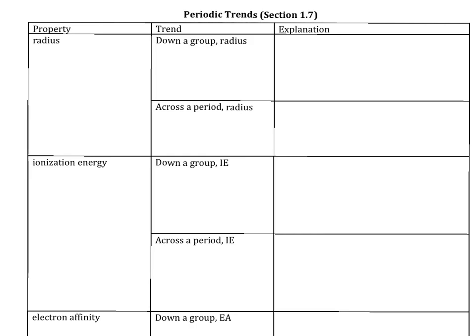In order to explain the trends in reactivity for metals and non-metals in the periodic table, we need to first understand trends in radius, ionization energy, and electron affinity. So let's focus first on radius.